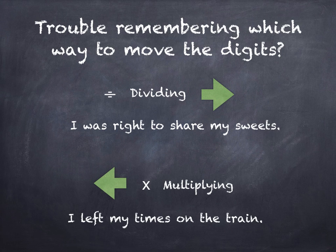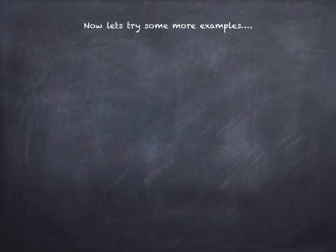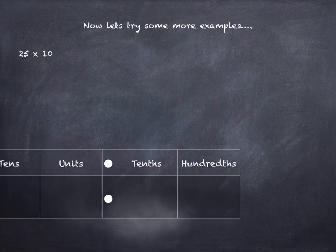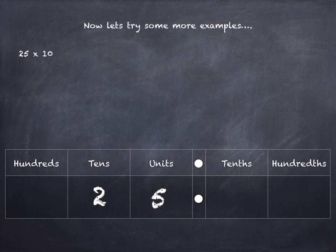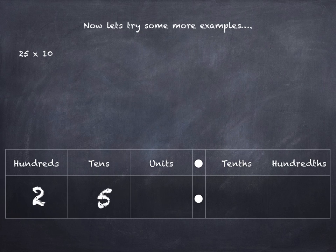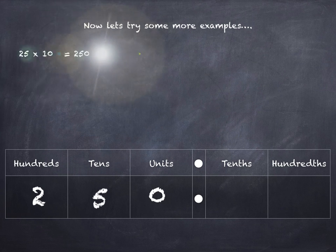Let's have a little bit more practice. Here's some more examples. 25 times 10 — pop it into our grid. We're multiplying by 10, so those digits go one place each to the left. We need a zero placeholder in the units. 25 times 10 is 250.